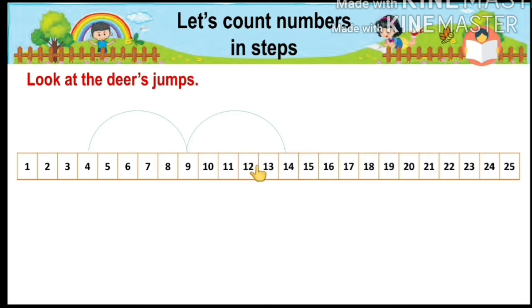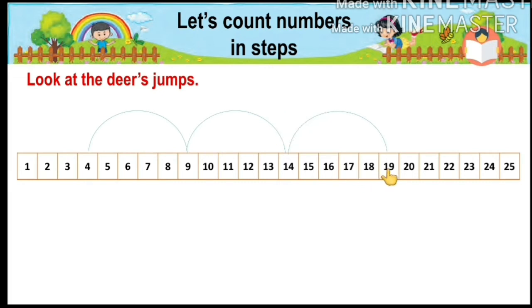The deer again jumps to the next number, fourteen. We count one, two, three, four, and five steps forward. Again the deer jumps to the next number, nineteen. We count one, two, three, four, and five steps forward.